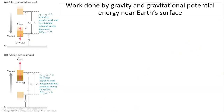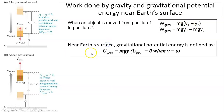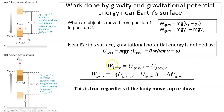Let's review work done by gravity and gravitational potential energy near Earth's surface. We know near Earth's surface gravity is constant. When an object is moved from position 1 to position 2, the work done by gravity is the force of gravity times the displacement. You get mgy1 minus mgy2. mgy is defined as potential energy. On the surface of the Earth, when y equals zero, gravitational potential energy is determined to be zero. So work done by gravitational force equals the potential energy at 1 minus potential energy at 2, which is the negative change of potential energy.